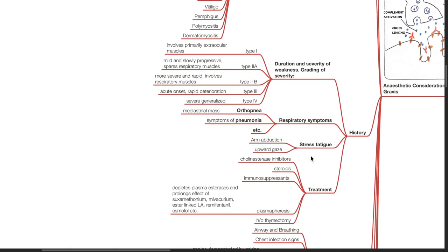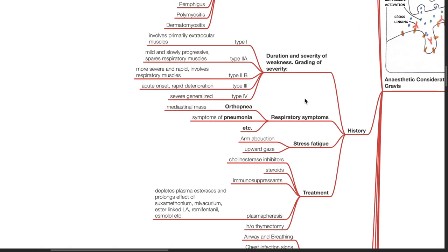History taking. Assess the duration and severity of muscle weakness. Grading of severity: Type 1 involves primarily extraocular muscles. Type 2a, mild and slowly progressive, spares respiratory muscles. Type 2b, weakness is more severe and rapid and involves respiratory muscles. Type 3, acute onset and rapid deterioration occurs. Type 4, severe generalized weakness.